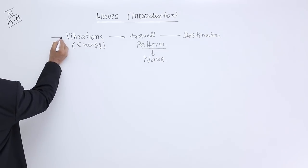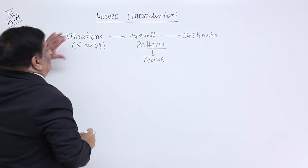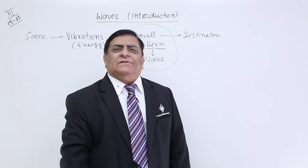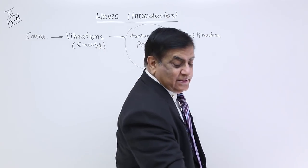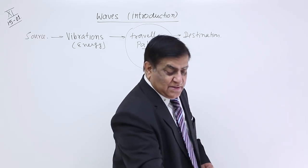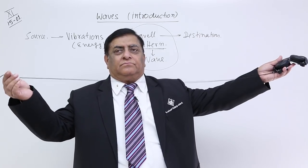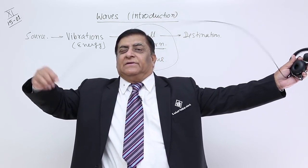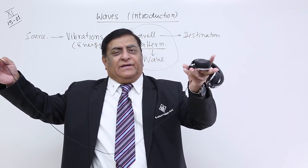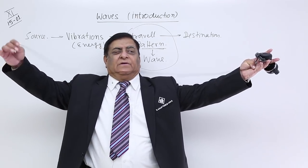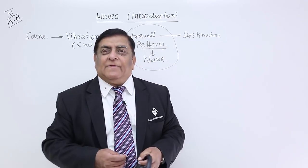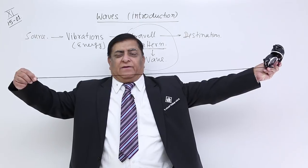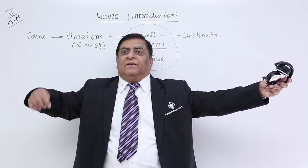So, from the source, vibrations are created. Energy travels, reaches the destination, and this pattern is known as wave. Suppose I have a string here. It is stationary now. Here I do some disturbance like this — I am creating disturbance here, but you find the disturbance is reaching this point. The pattern it is making is wave.